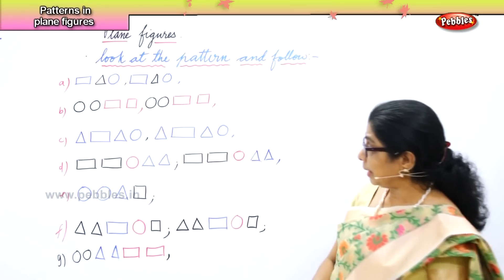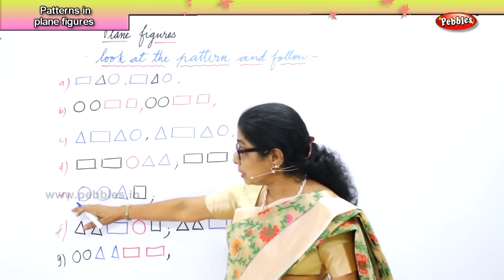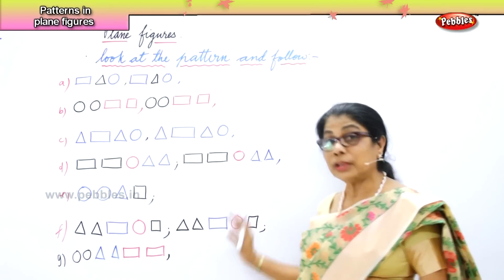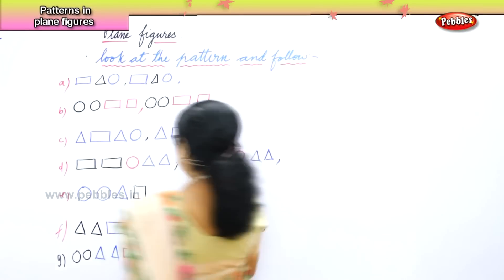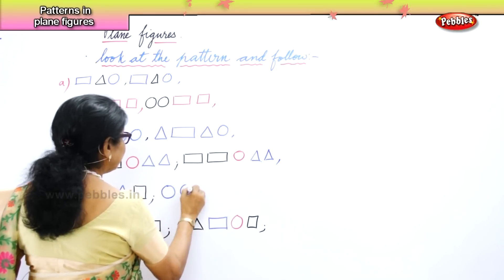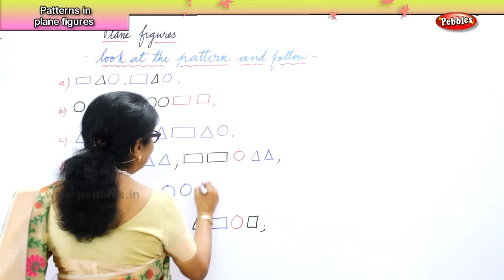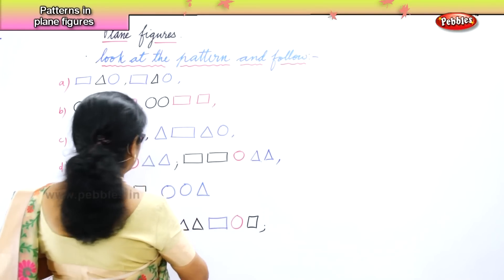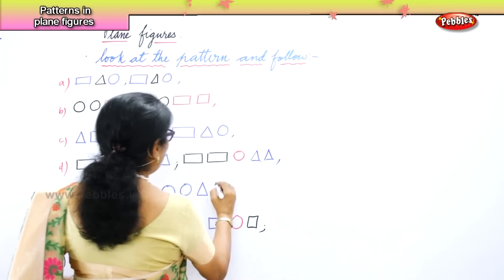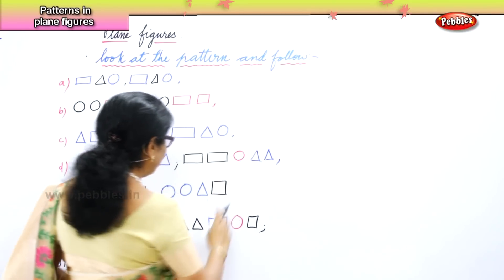Now in this case you have here two circles, one triangle, one square. So you follow that pattern — two circles, then you have one triangle and then you have one square. You follow that pattern.